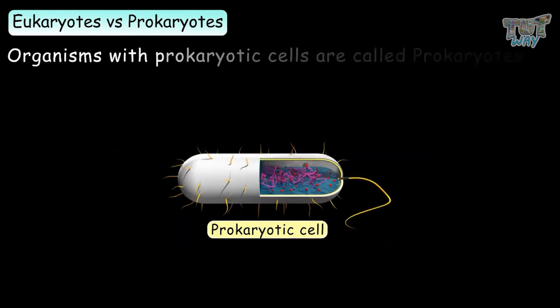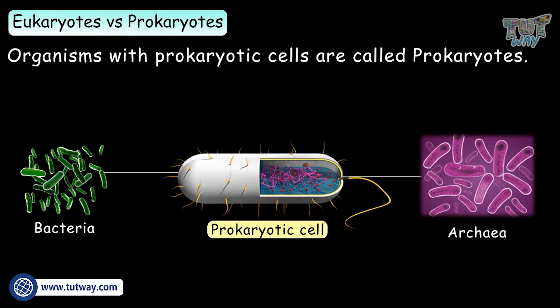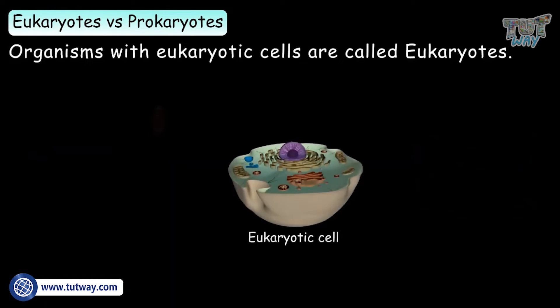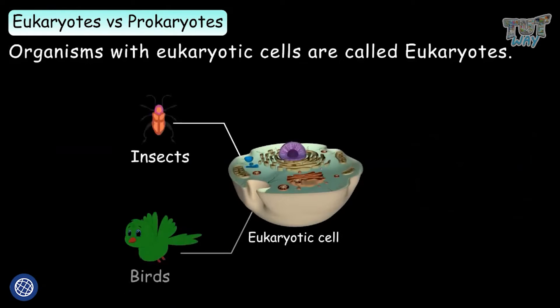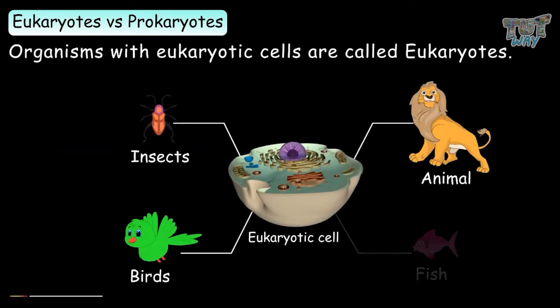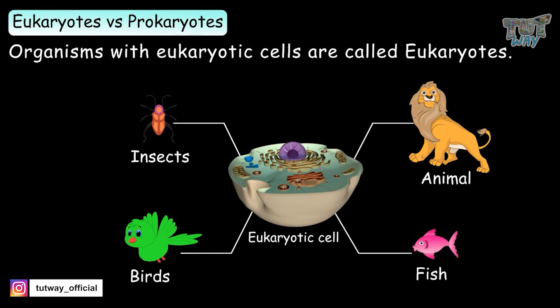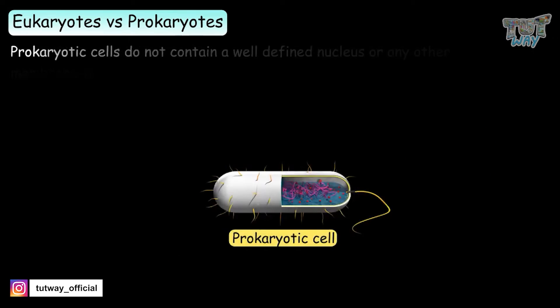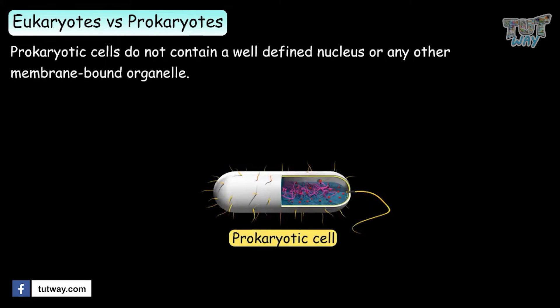Organisms with prokaryotic cells are called prokaryotes, and organisms with eukaryotic cells are called eukaryotes. Prokaryotic cells do not contain a well-defined nucleus or any other membrane-bound organelle.